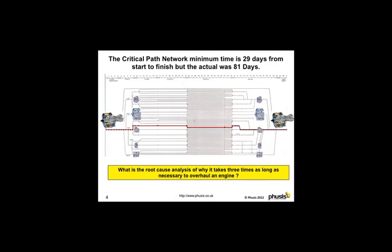In this client example, the absolute minimum time is 29 days — but remember, the contract is 56 days and the client is taking 81. So why does it take three times as long as necessary to overhaul an engine?